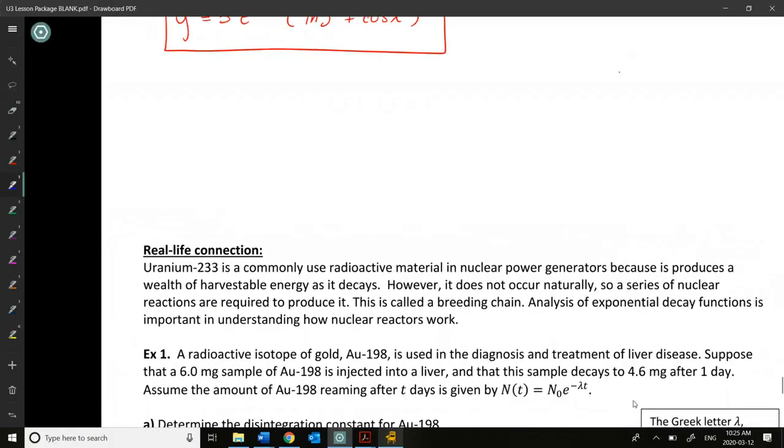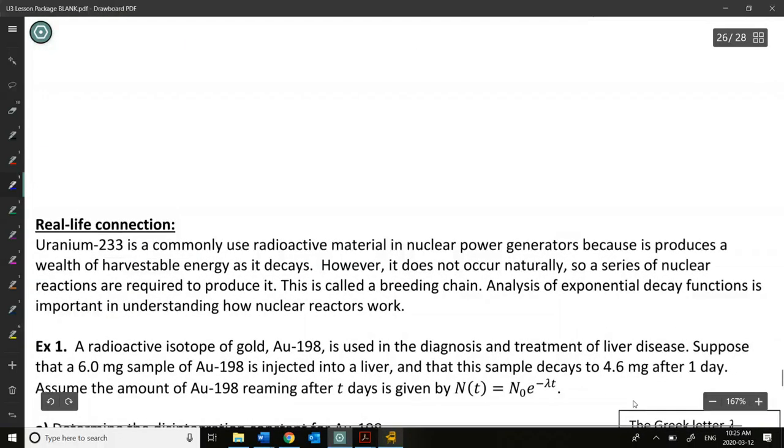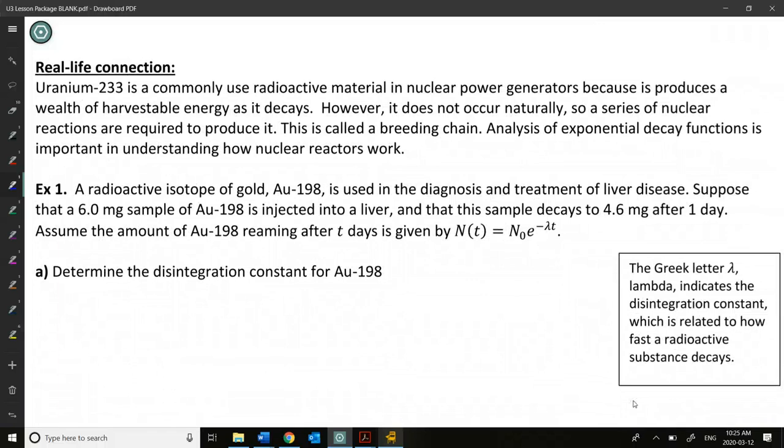So some types of things that we use derivatives of exponential functions to analyze would be things like uranium-233. This is a radioactive material that's found in nuclear power generators, and it produces a wealth of harvestable energy as it decays. So it doesn't occur naturally, so a series of nuclear reactions are required to produce it. So it's called a breeding chain.